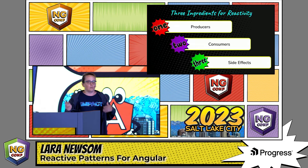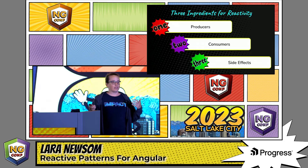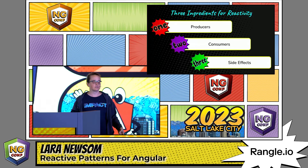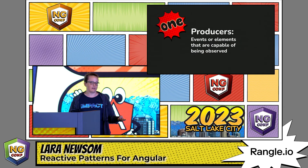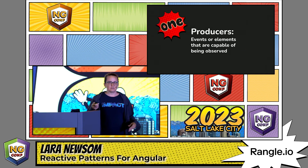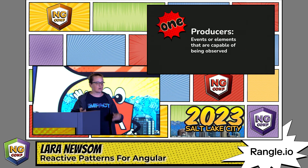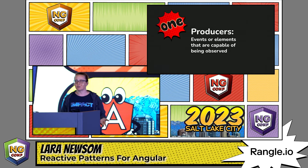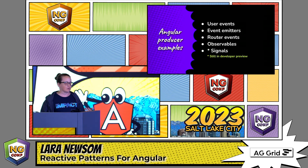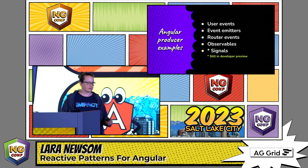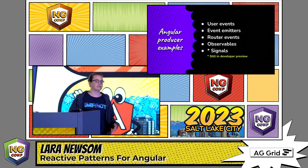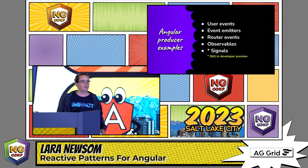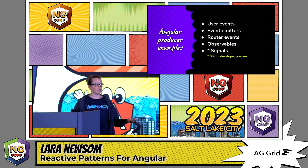When we talk about reactivity, I'd like to think about it with three ingredients: producers, consumers, and side effects. Producers are elements or events that are capable of being observed. In Angular, producer examples include button clicks, inputs, observables, and signals — those will be producing values for us.